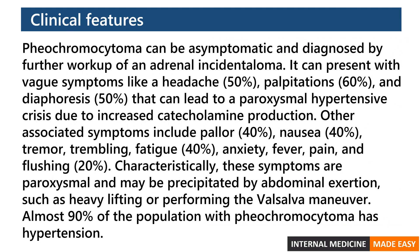Pheochromocytoma can be asymptomatic and diagnosed by further workup of an adrenal incidentaloma. It can present with vague symptoms like headache, palpitations, and diaphoresis that can lead to a paroxysmal hypertensive crisis due to increased catecholamine production. Other associated symptoms include pallor, nausea, tremor, fatigue, anxiety, fever, pain, and flushing. Characteristically, these symptoms are paroxysmal and may be precipitated by abdominal exertion such as heavy lifting or performing the Valsalva maneuver.